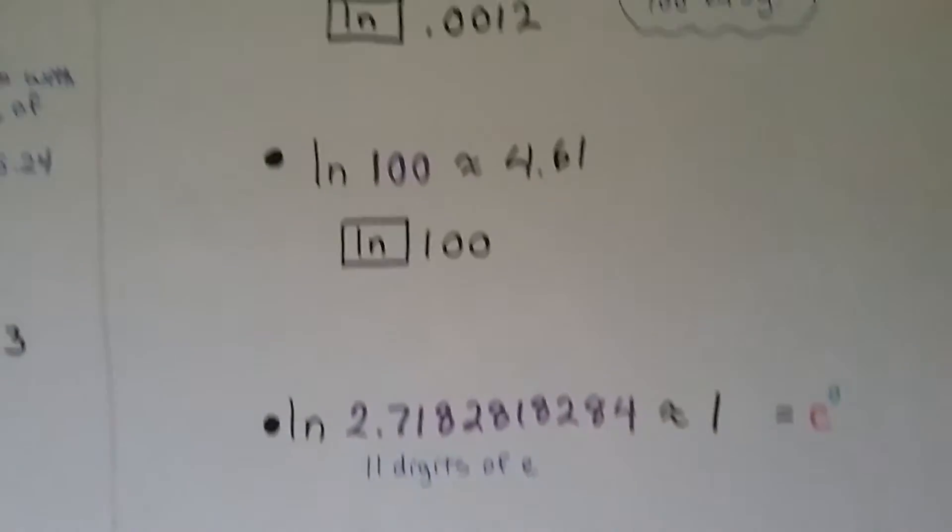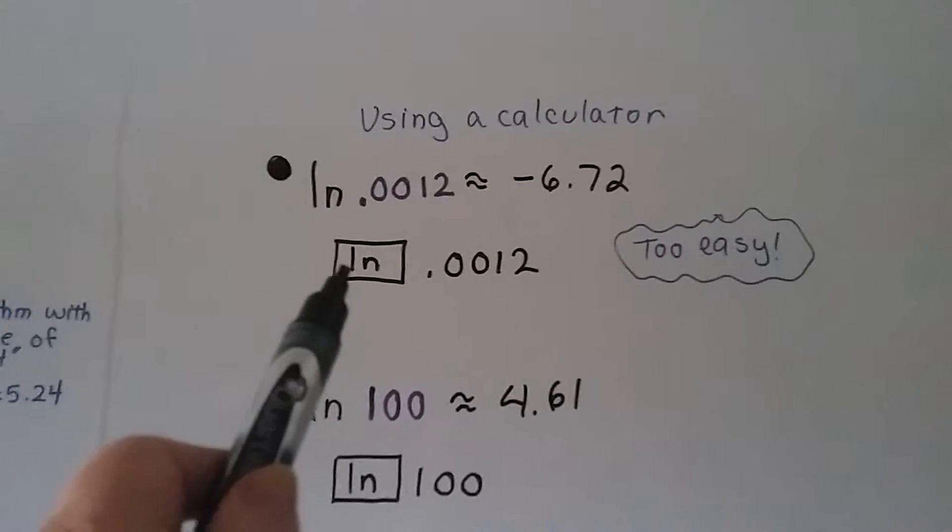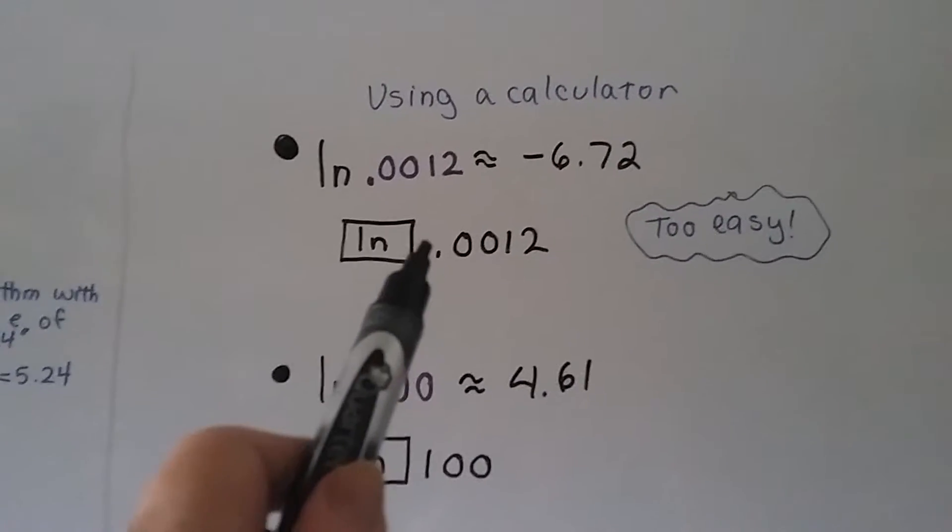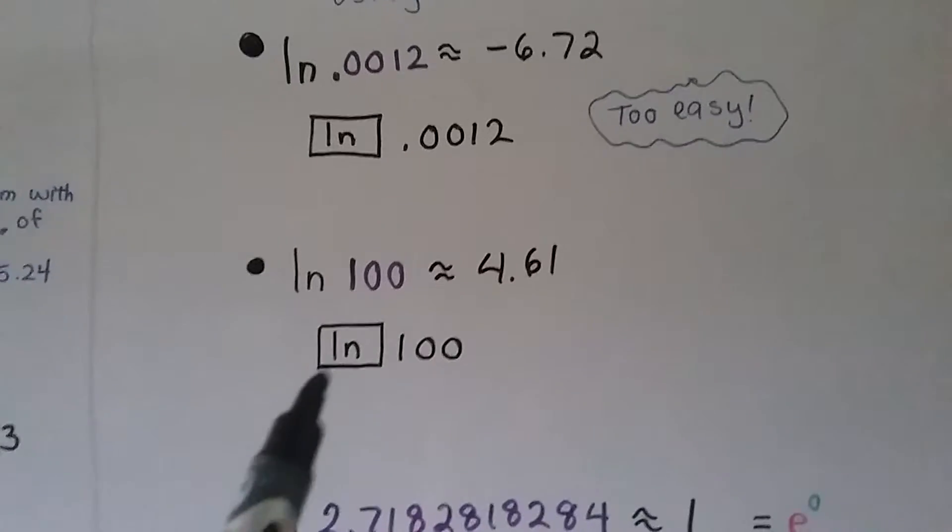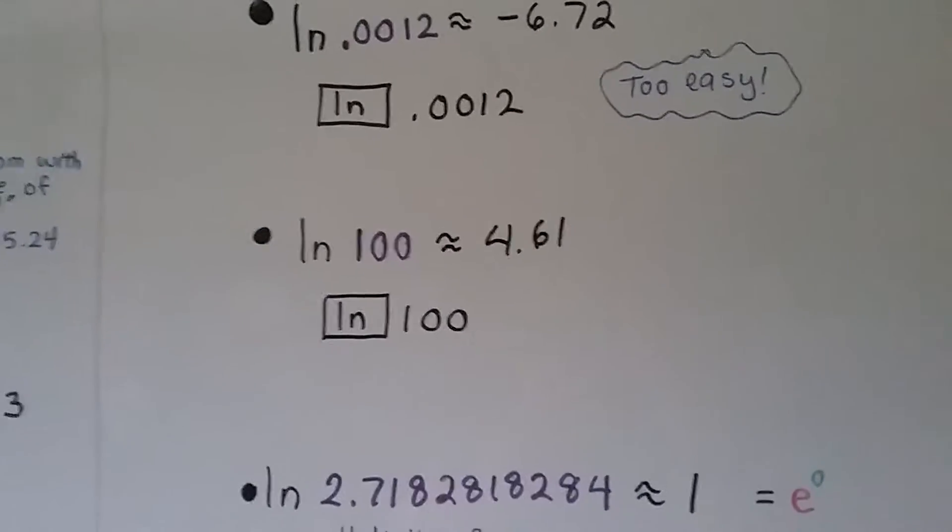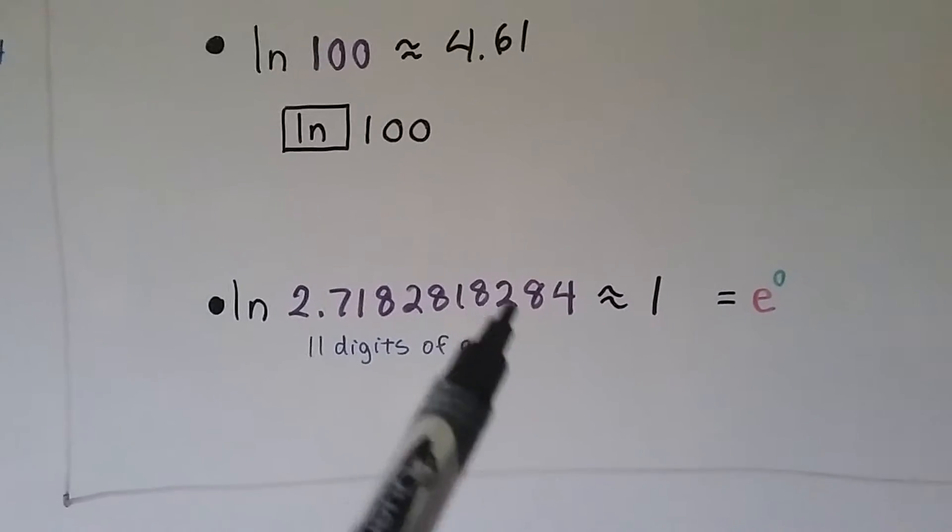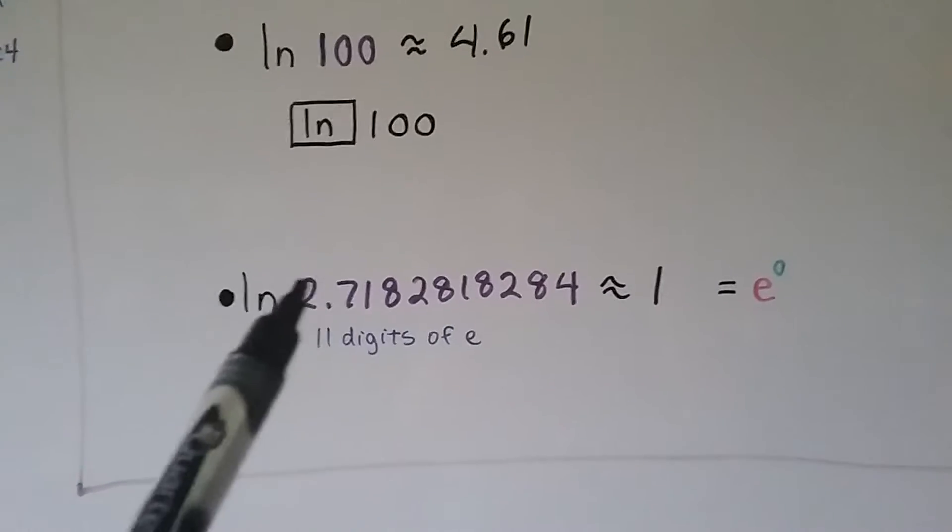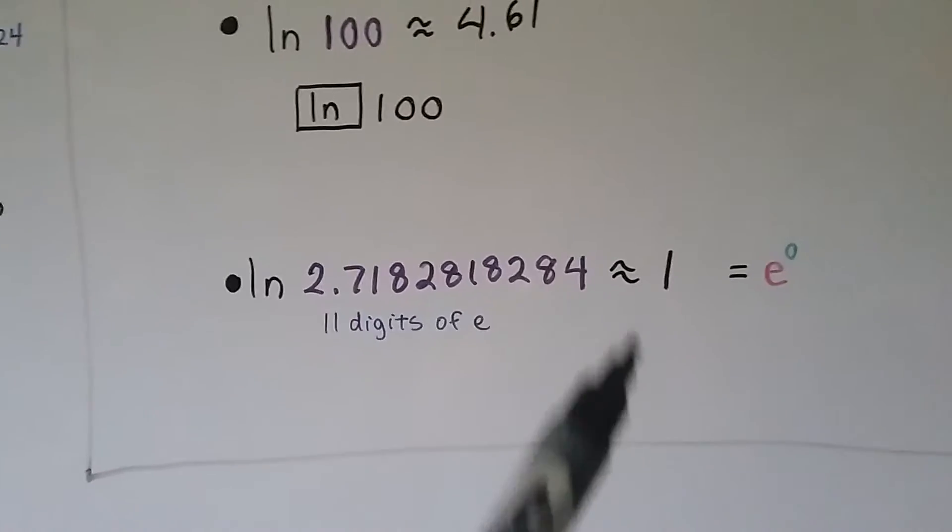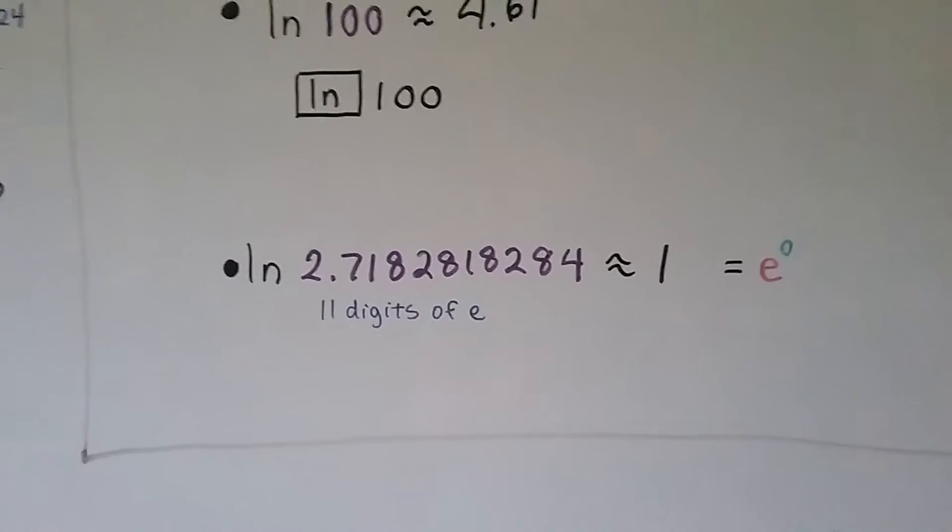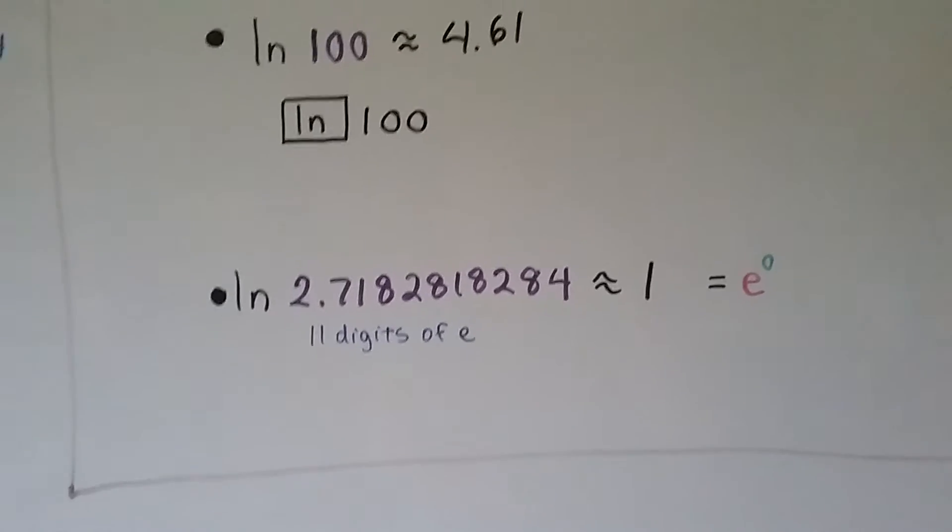It's really easy if you're doing this on a calculator because if you want to find the natural log of 0.0012, you just hit that ln button key and then put in 0.0012, and it gives you the answer. If you want to find the natural log of 100, you hit that key and then put in 100, and it gives you the answer. For fun, if you put in 2.7182818284, is that number familiar? Yeah, that's e. If you hit this key and then put in that decimal, the 11 digits of e, you're going to get a 1. Isn't that cool? Which is really e to the 0 power.